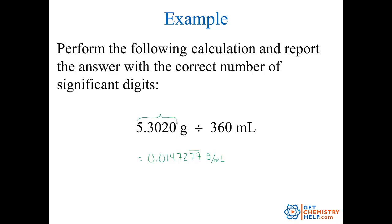For 5.3020: the 5, 3, 0, and 2 are significant, and the trailing zero counts because there's a decimal point — so this is five significant figures. For 360: the 3 and the 6 are significant, but the trailing zero is not significant because there's no decimal point. So 360 has only two significant digits.